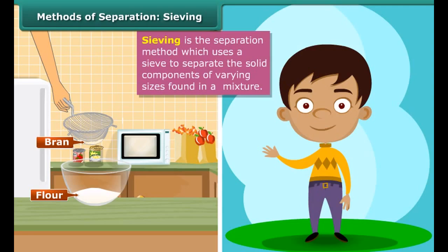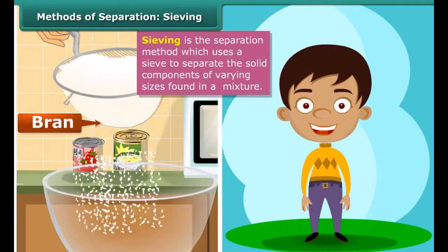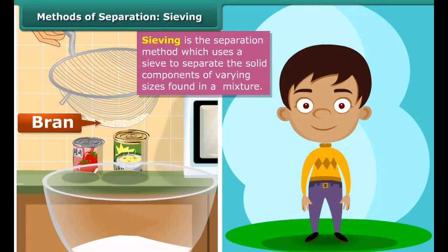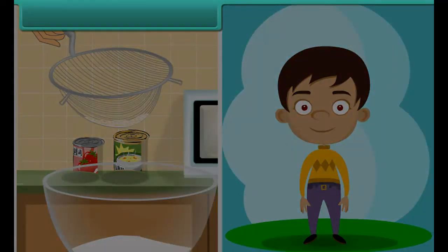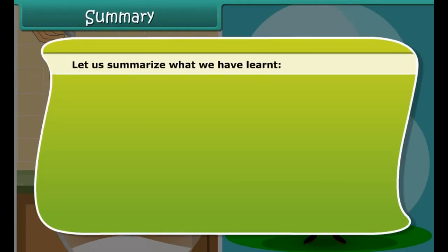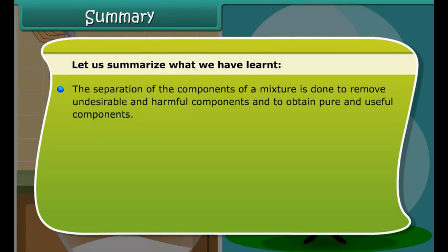Children, have you seen how your mother removes bran and other impurities from flour? They separate the coarse bran from the fine flour with the help of a sieve. This technique of using a sieve to separate the solid components of different sizes in a mixture is known as sieving. In this method, the mixture is placed on the sieve and shaken. Smaller particles pass through the holes of the sieve to the container placed below and are thus separated from the bigger particles that are retained in the sieve.